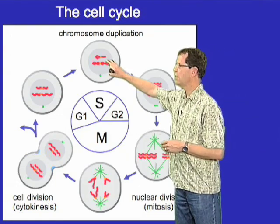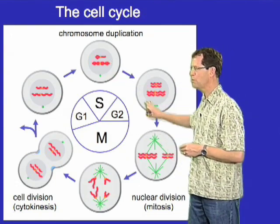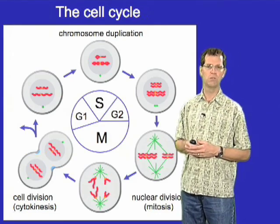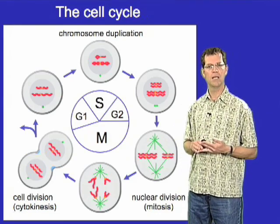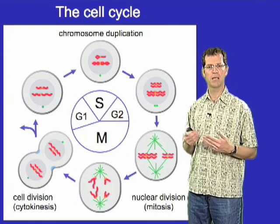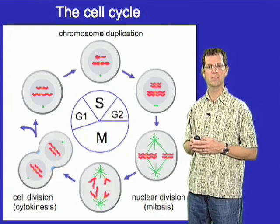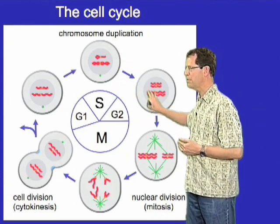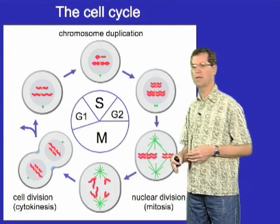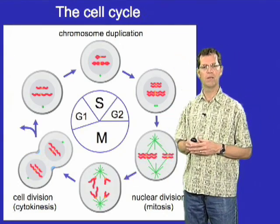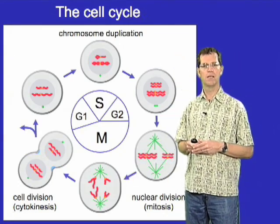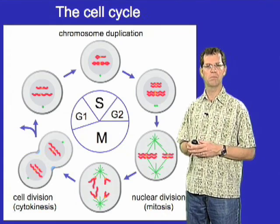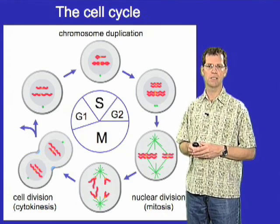Throughout this process, it's not just the chromosomes that duplicate, but all other components of the cell also duplicate — all the proteins, organelles, RNAs, and all other macromolecular complexes are duplicated continuously throughout the entire cell cycle, so that by the time the cell divides at the end of M phase, the resulting daughter cells are essentially about the same size as the cell that first began that cell division cycle.